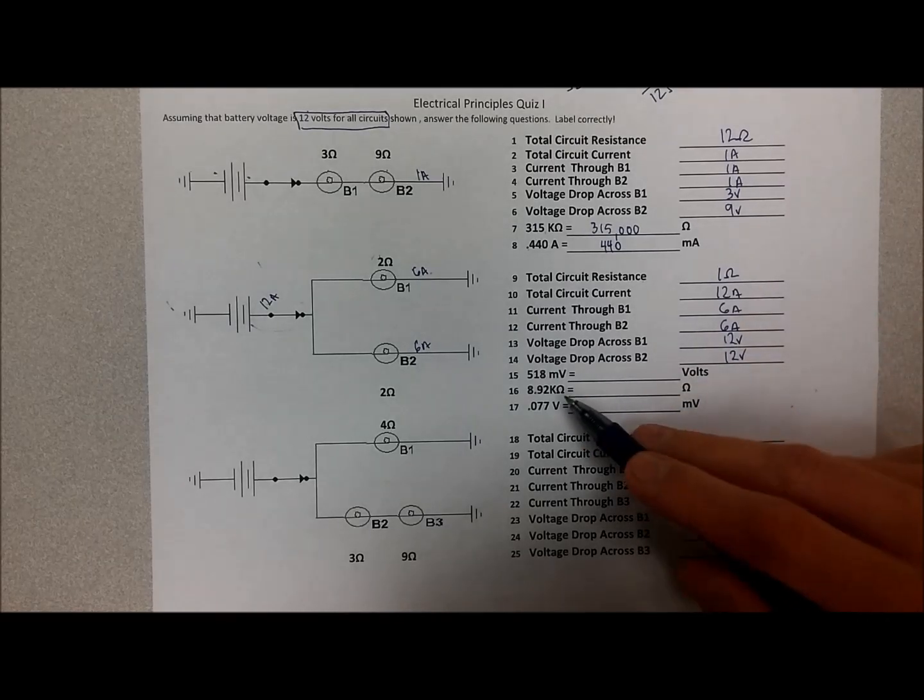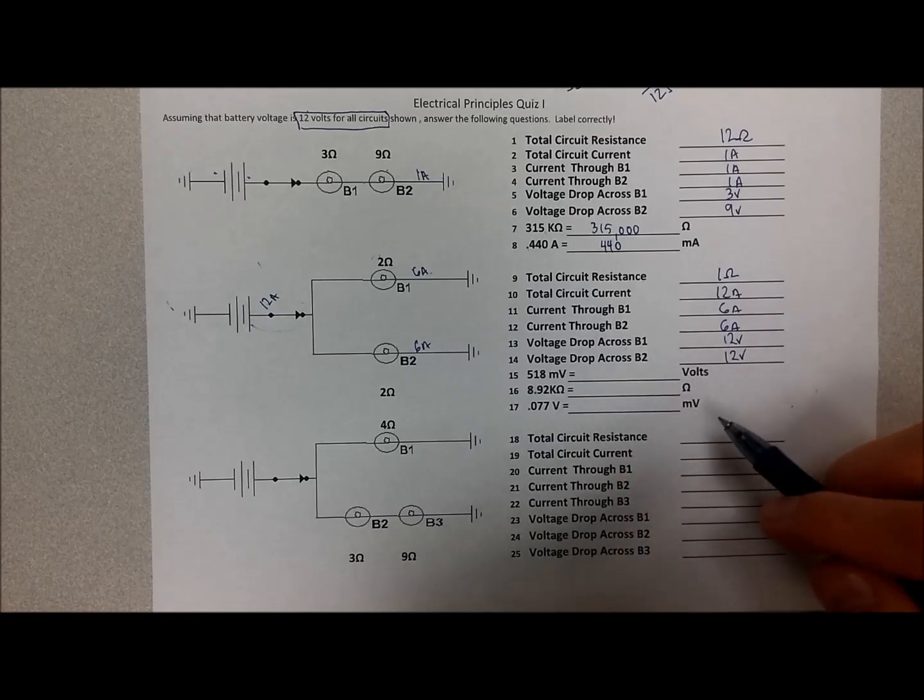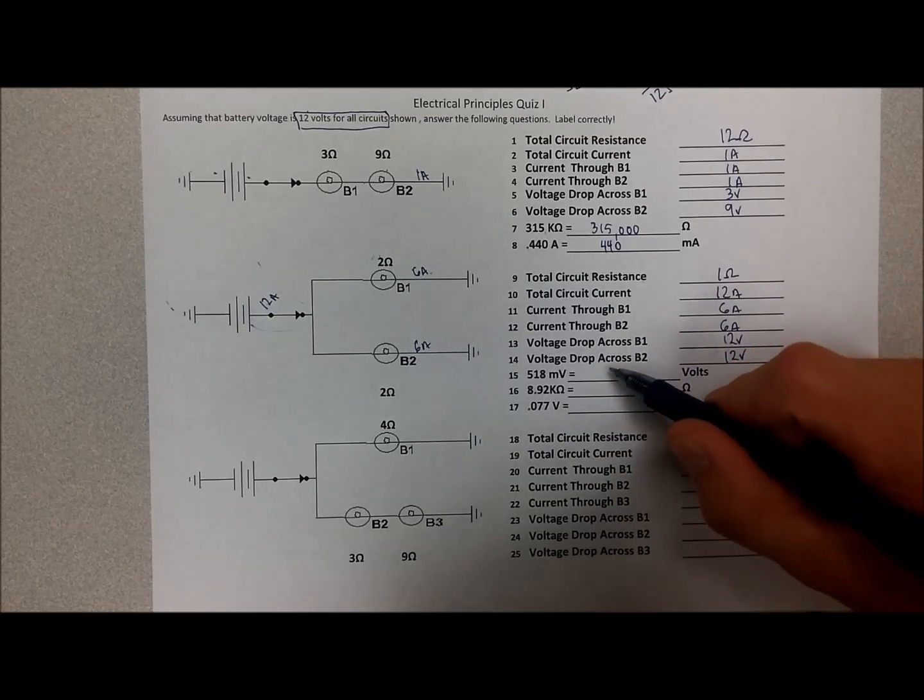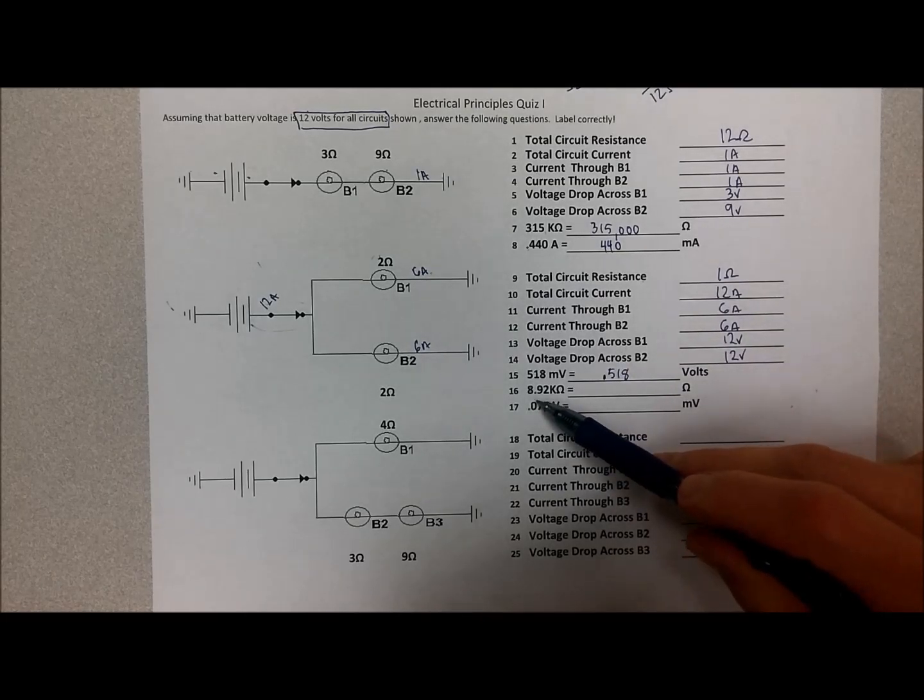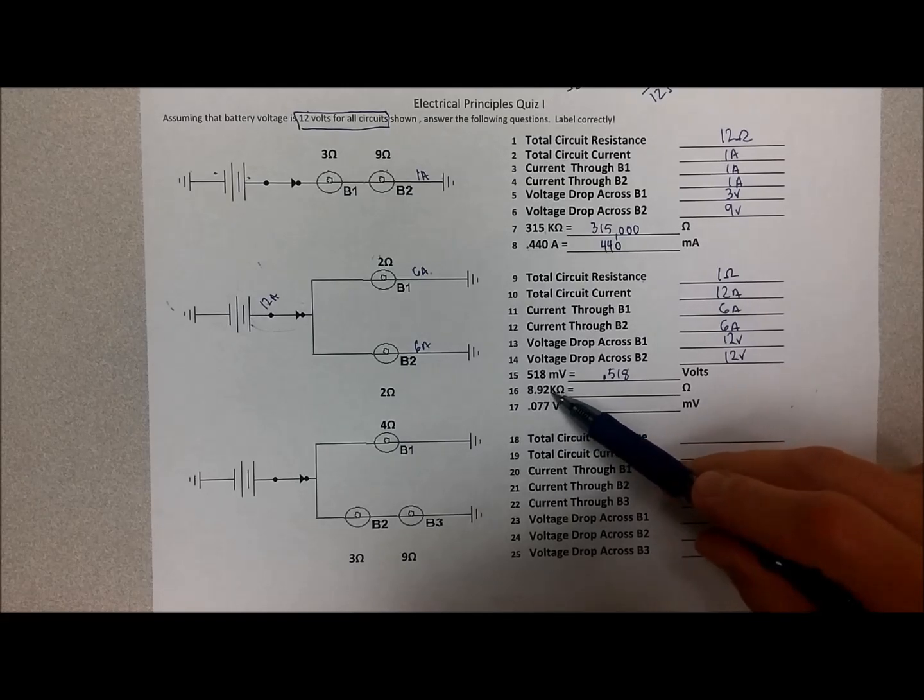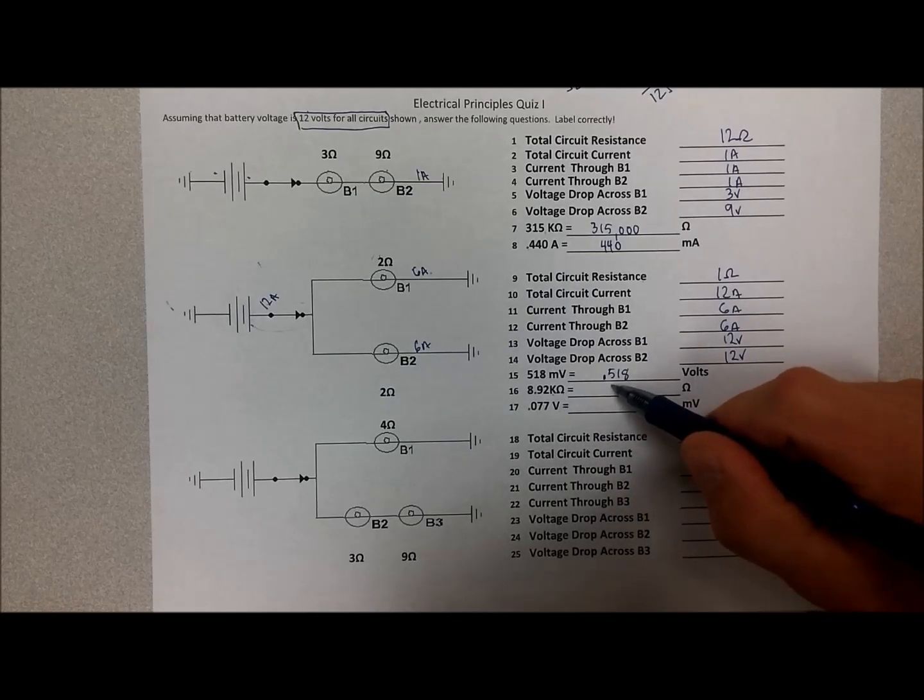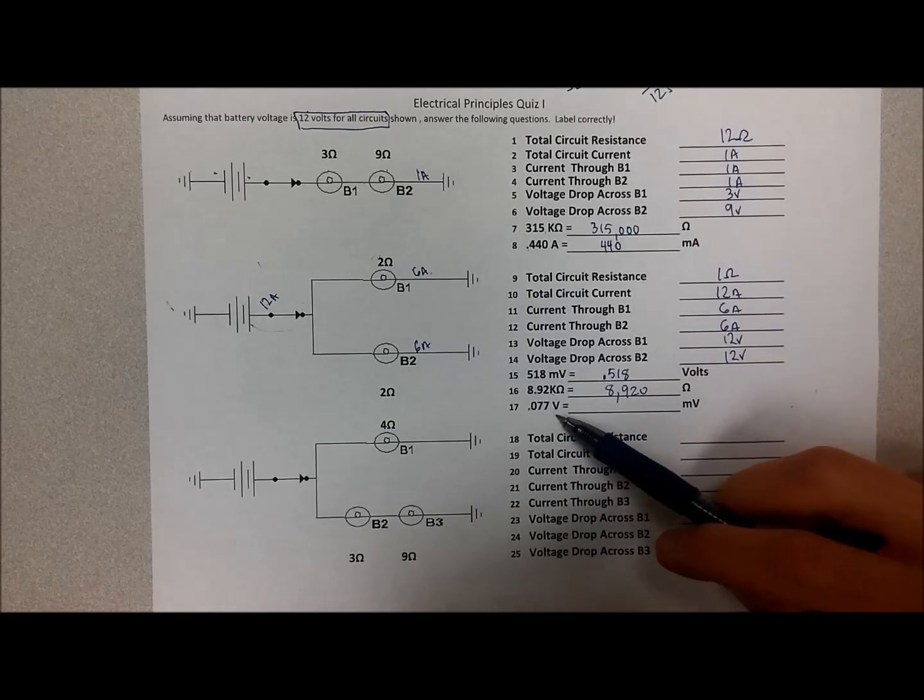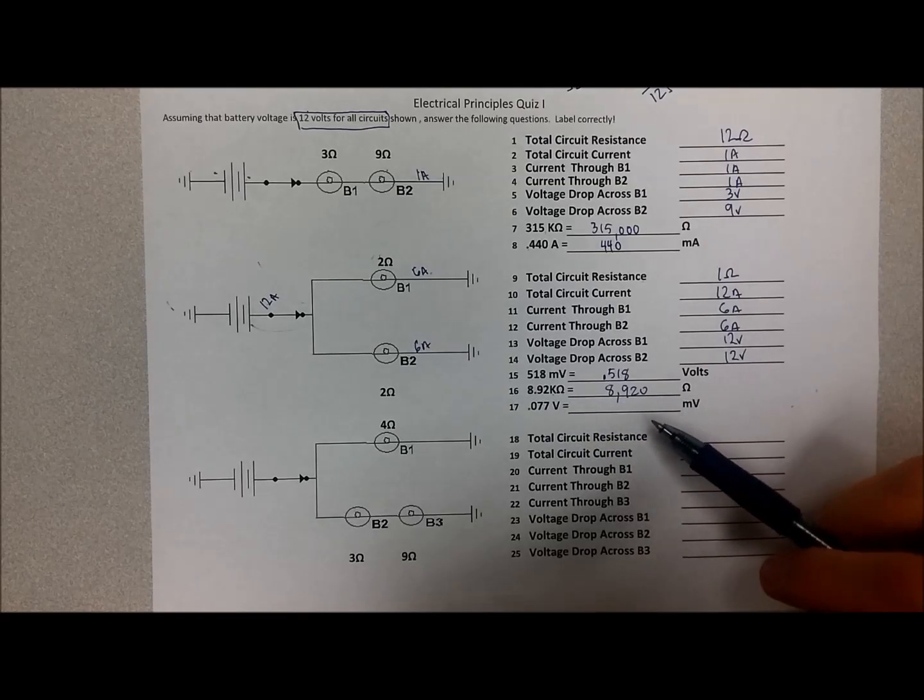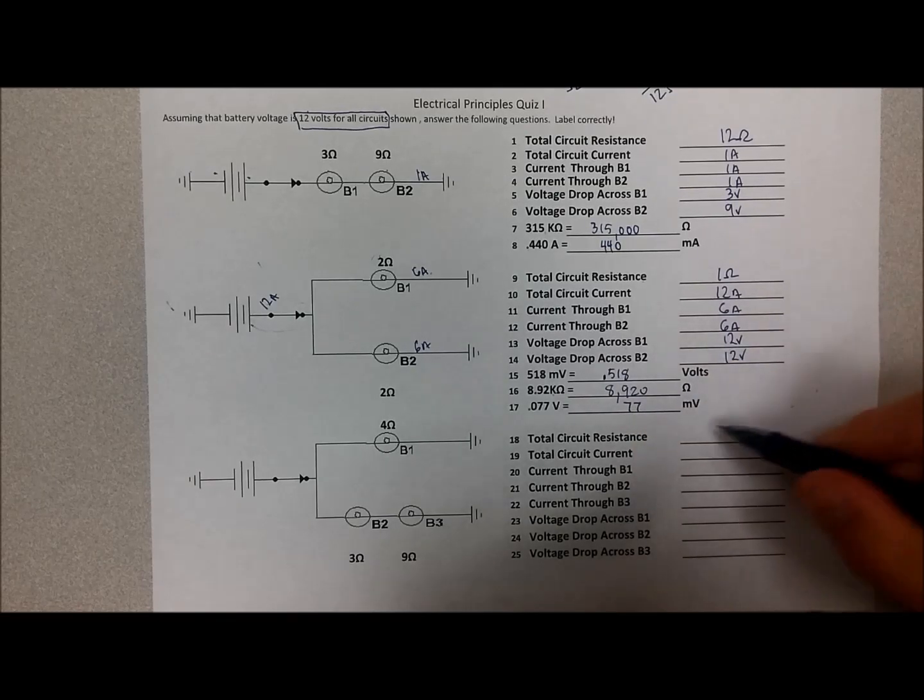Okay, so let's calculate these, 518 millivolts to volts, so we're going from a smaller denomination to a larger one. So we end up moving the decimal three places to the left. So that is 0.518 volts, 8.92 kilo ohms. We're going from a larger denomination to a smaller. So we say it's 8.92 thousand ohms. So 8,920 ohms, 0.077 volts, large denomination to a small one. So we move the decimal place to the right three places. We end up with 77 millivolts.